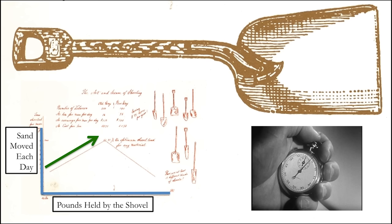He did this every night and kept taking a little bit off the shovel until he saw the number peak. Every time they took a little bit off, the numbers went up. Then he noticed he kept taking more and more off the shovel, and then the numbers started to go down — they were actually finishing their piles later in the day on average. So he said, maybe we've passed the midpoint, and went back to slightly larger shovels.